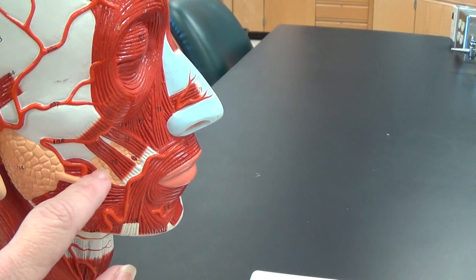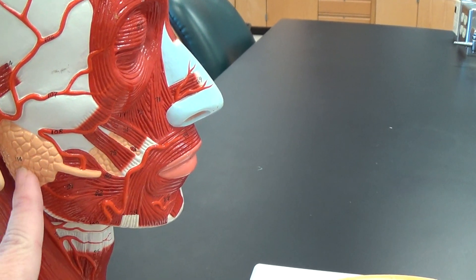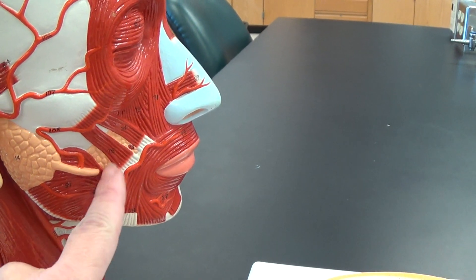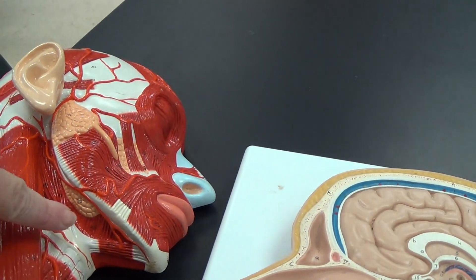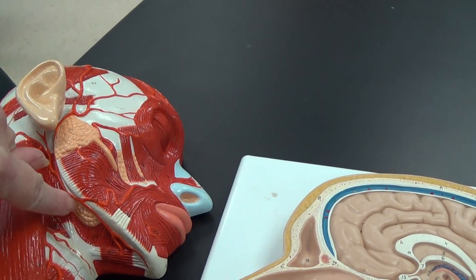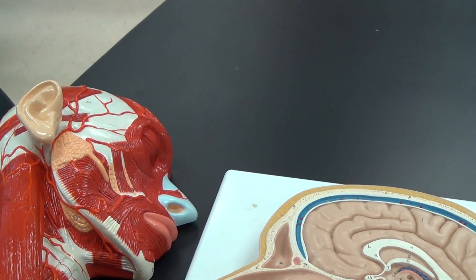We have sublingual, which is this peach-colored material here underneath the muscle. Turn this guy over, and there's another one here—the submandibular salivary gland.